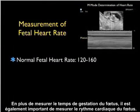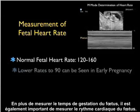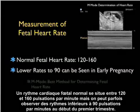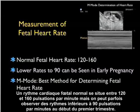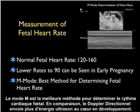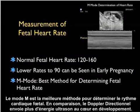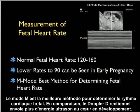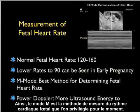In addition to measuring the gestational age of the fetus, another very important concept is to get a measurement of the fetal heart rate. Normal fetal heart rates will range from 120 to 160 beats per minute, but lower rates down to 90 beats per minute can be seen in early pregnancy in the early parts of the first trimester. M mode is the best method for determining fetal heart rate. Power Doppler, in contrast, gives more ultrasonic energy to the developing heart. Thus, M mode is the preferred way of measuring the fetal heart rate at this time.